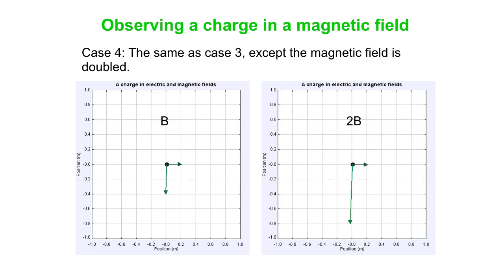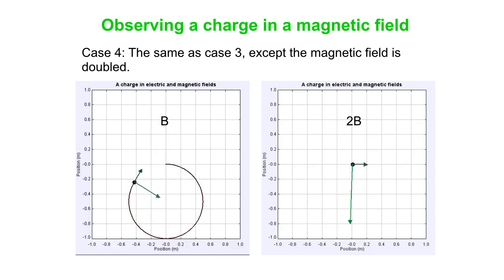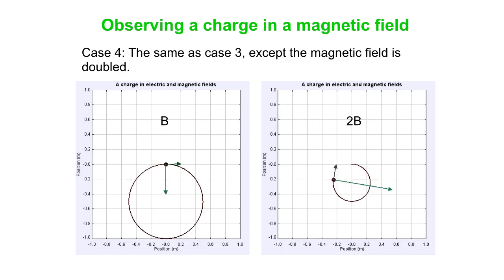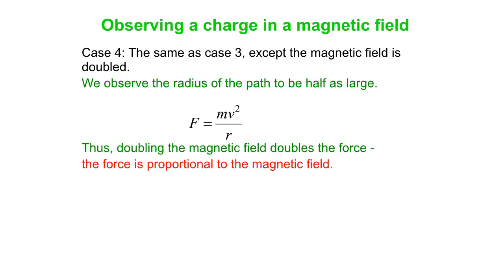Let's do more observations. On the left we see what happens when a charged particle is in magnetic field B. If the field is doubled to 2B, the radius of the path is reduced by a factor of 2 — half the radius when we double the field. So the force is proportional to the magnetic field: doubling the magnetic field doubles the force. That's similar to what we got for electric fields, where F = QE.